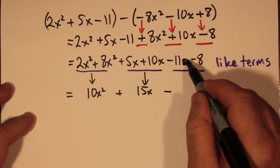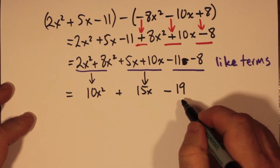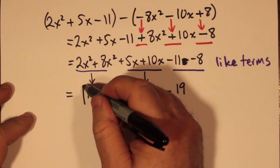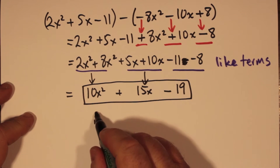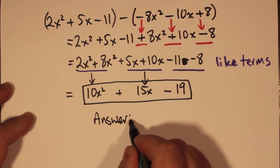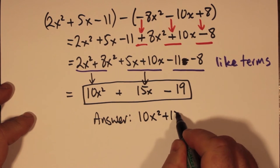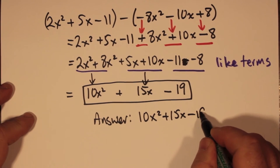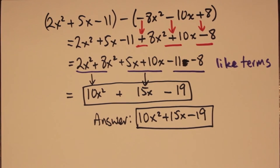That results in, when we add 2x squared and 8x squared together, we end up with 10x squared. When we add 5x and 10x together, we get 15x. And we take a negative 11 and take away 8. You get negative 11 minus 8, which makes negative 19. It's like adding 11 and 8, except you're adding negative numbers. So you get a number that's even more negative when you do that.